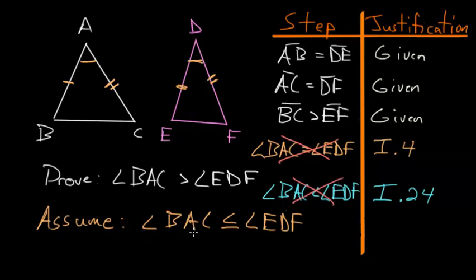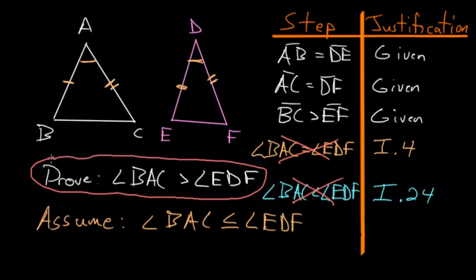And since BAC, the angle, cannot be less than EDF or equal to it, that means there's only one possibility: that it has to be bigger than the angle EDF. So we can end with QED.